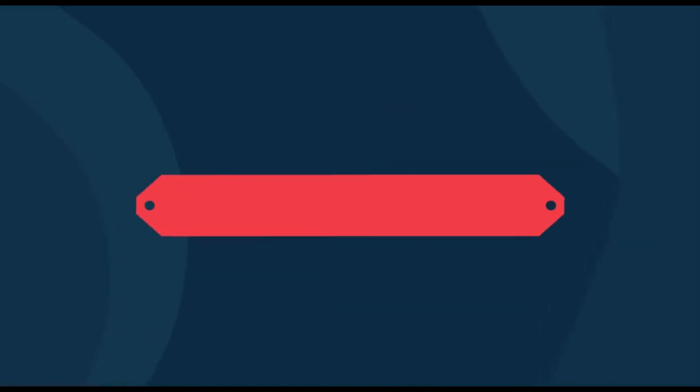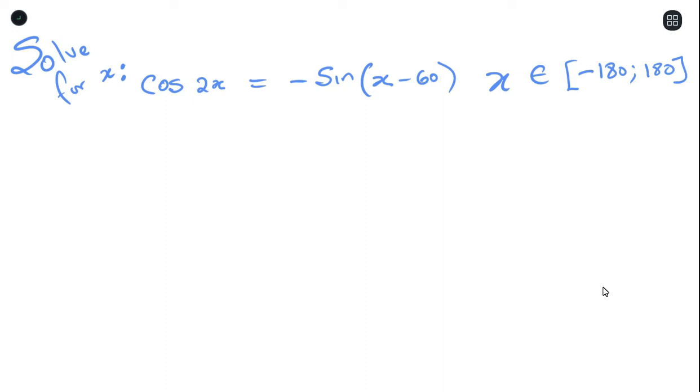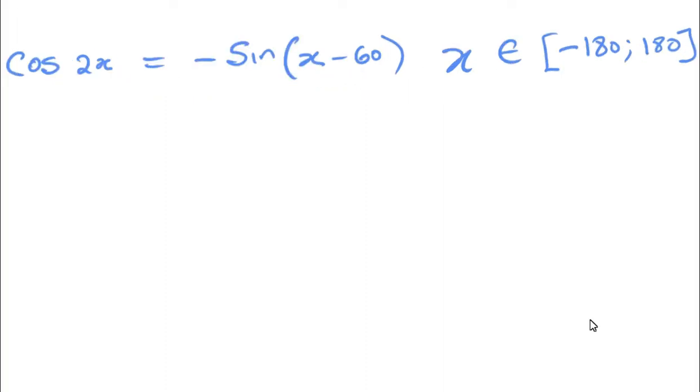Now that we've covered general solutions, let's try a question where we have to find a specific solution within a specific range. The question says: solve for x given cos2x = −sin(x − 60), where x is an element of [−180°, 180°].